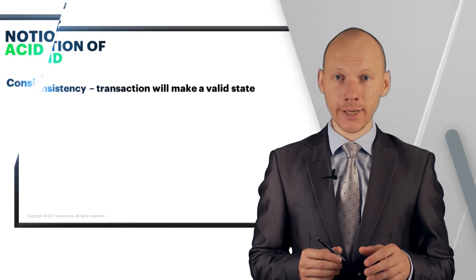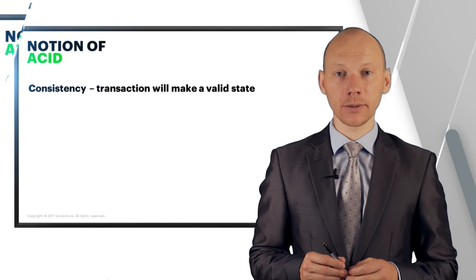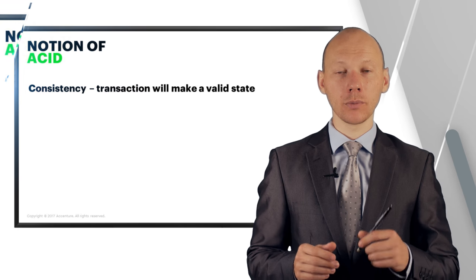The next thing is consistency. And it means that all the transactions that, for example, database is taking upon it will bring this particular database from valid state to a valid state. There will be no such transactions that will violate the state. For example, if you're trying to make some kind of rearrangement in your house, this means that from the start your house will be in a valid state.